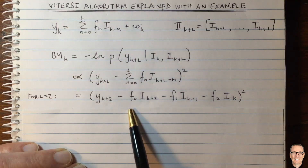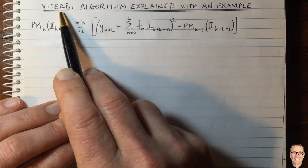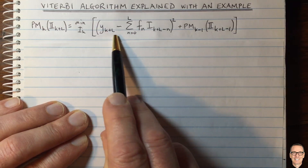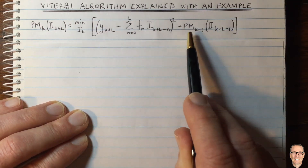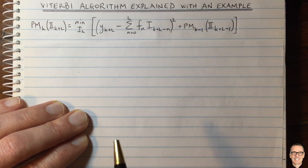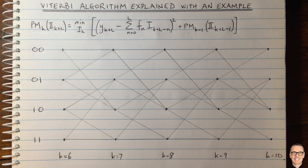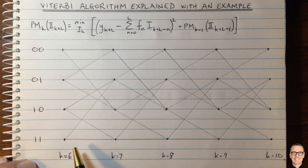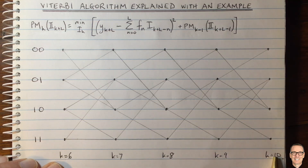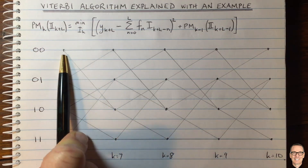Now let's look at the actual Viterbi algorithm equation. Here we have the Viterbi algorithm equation, and we can see this term here is the branch metric. We're going to be adding it to something called a path metric. Here we have a trellis for this example when L equals 2. For more information on trellises, check out the description below this video. We have an example with k equals 6, 7, 8, 9, and 10 — I've just chosen those time periods. And we've got four states in our trellis at each time period.